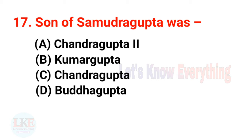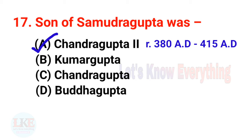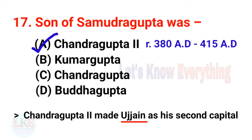Question 17: The son of Samudragupta was Chandragupta II, who reigned from 380 to 415 AD. Friends, remember that Chandragupta II made Ujjain his second capital.